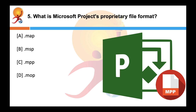What is Microsoft Project's proprietary file format? The correct answer is C — Microsoft Project is a project management software, a product developed and sold by Microsoft. Microsoft Project's proprietary file format is .MPP.